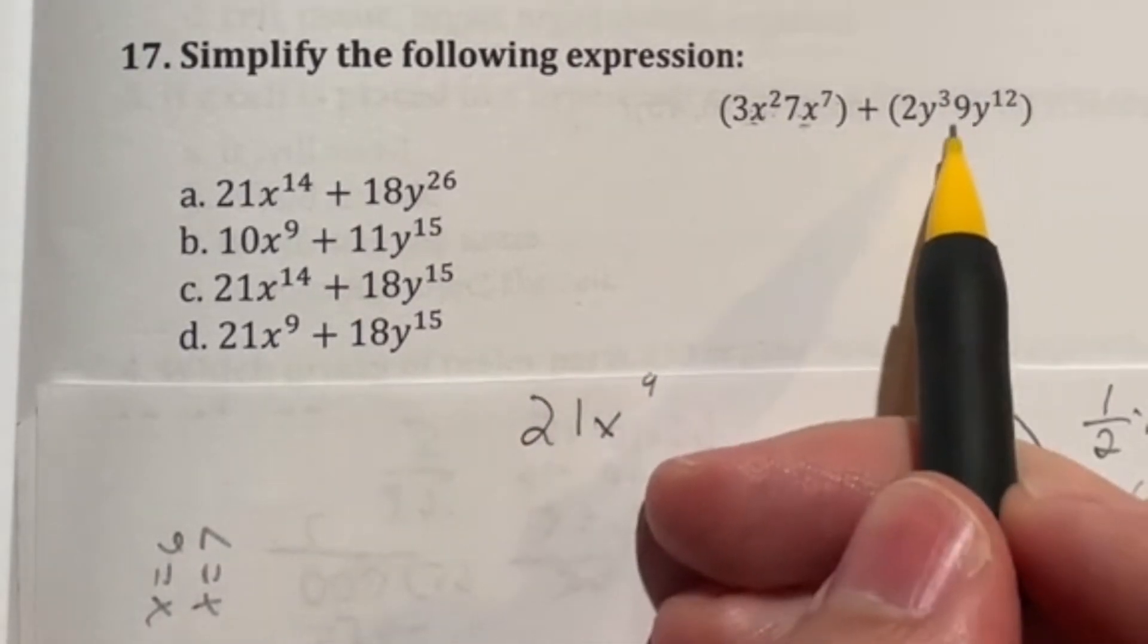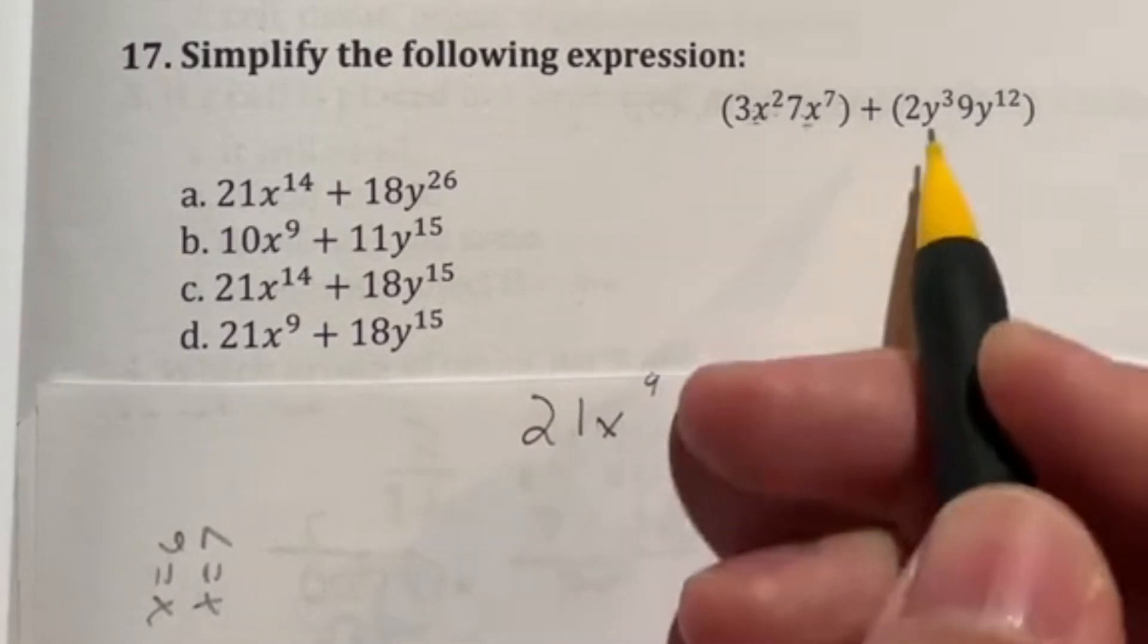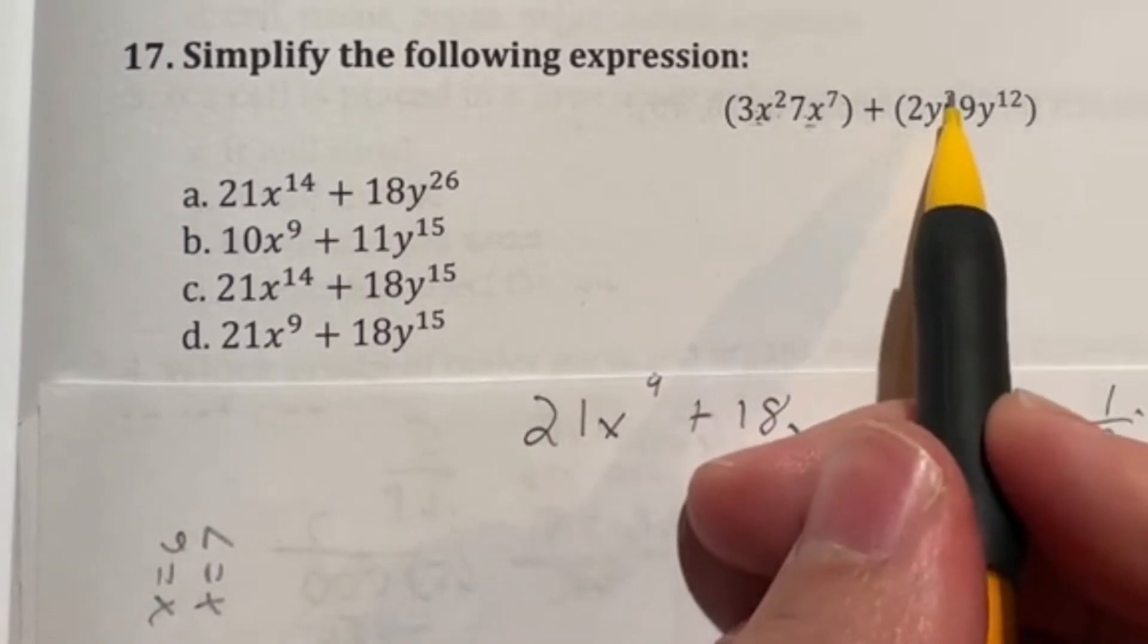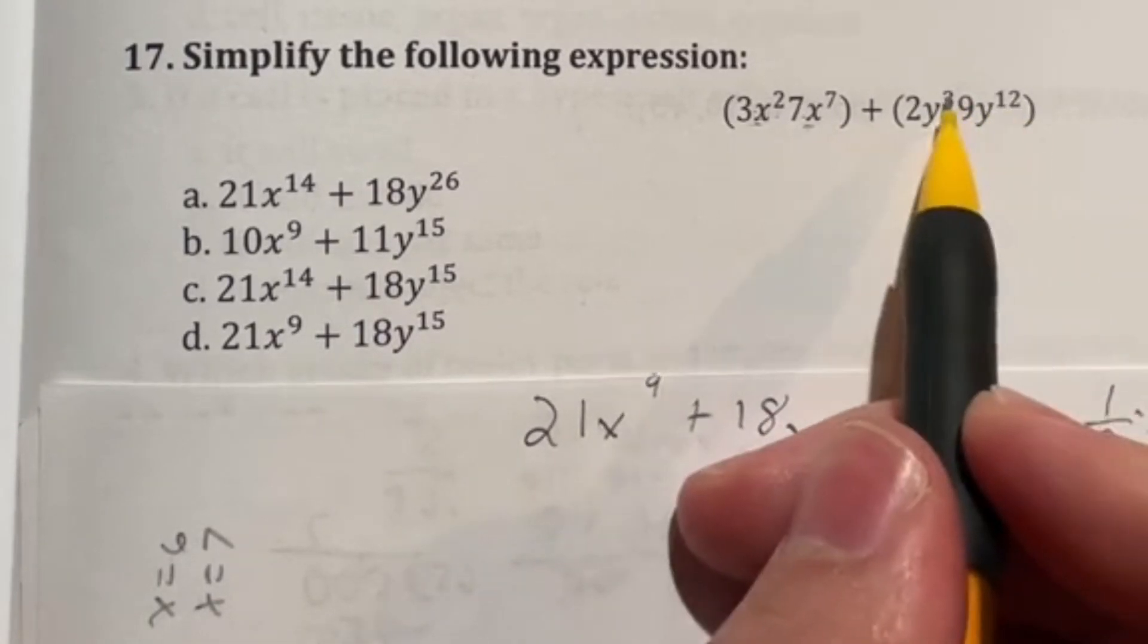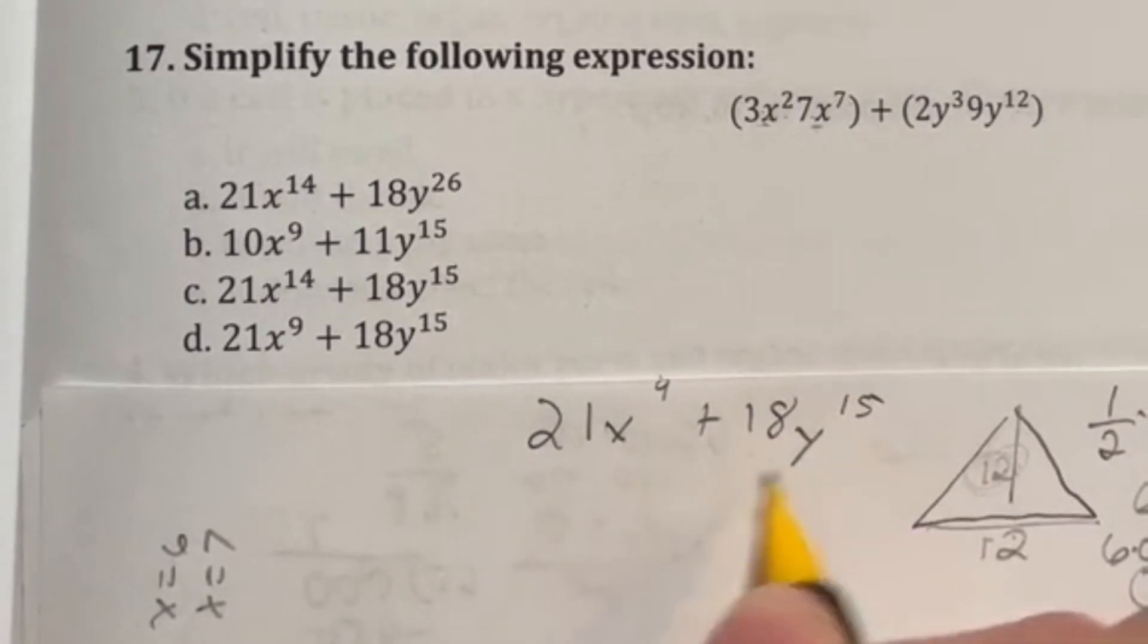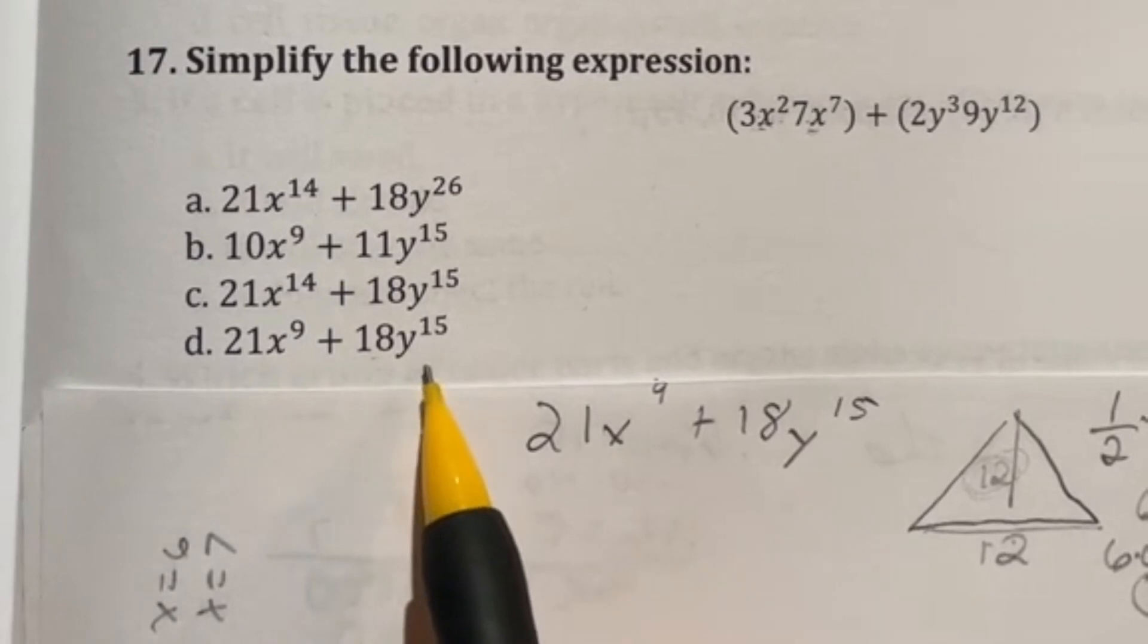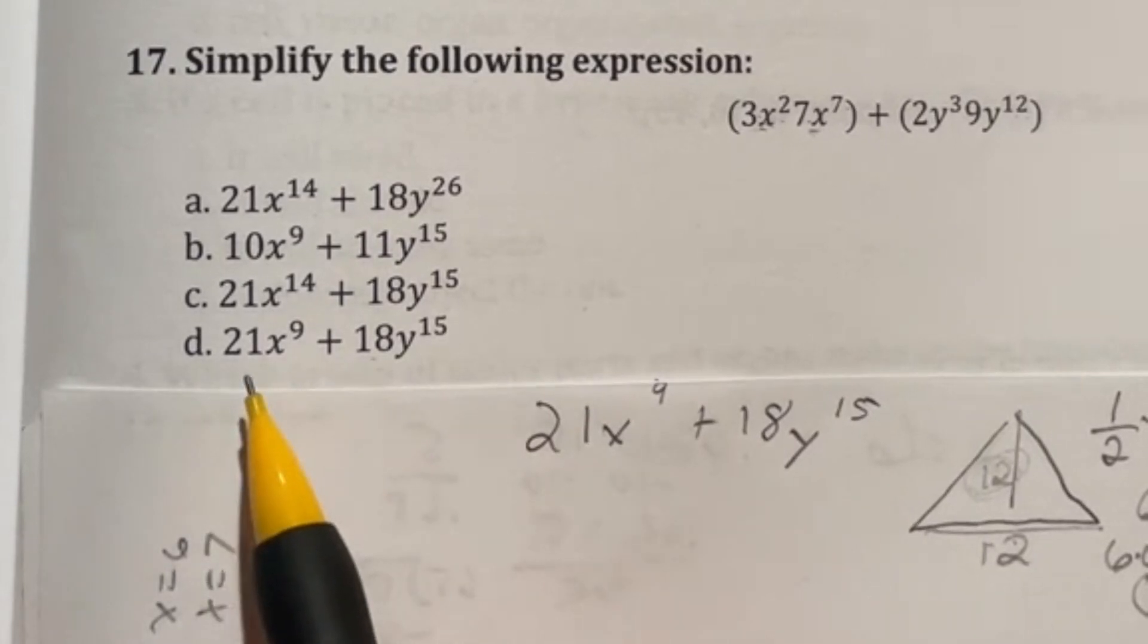Now we're going to do the same thing over here with this term. We're going to have the plus in between, but two times nine is going to give me 18. And then just like before, y to the third times y to the twelfth being multiplied means we can add those exponents. So 12 plus three gives me 15. So this should be our final answer. Let's take a look through our options. I see the 21x to the ninth here and that also says 18y to the 15th. So we're good to go. It looks like our answer here should be D.